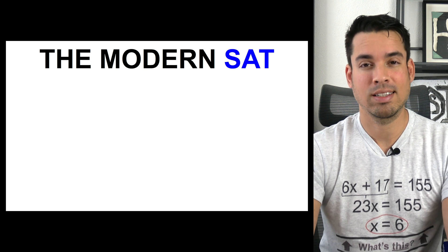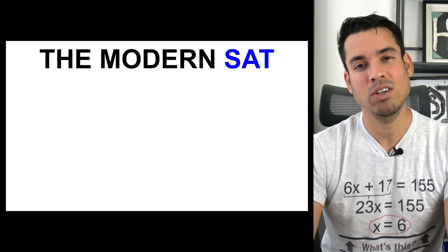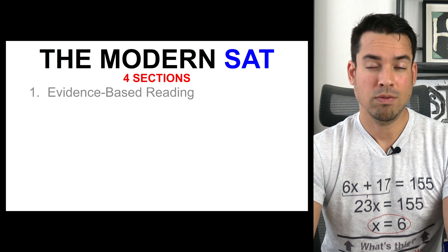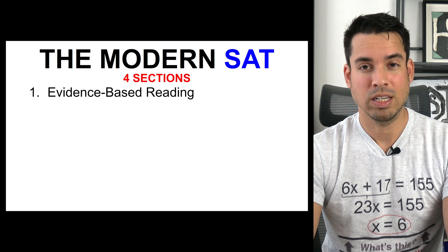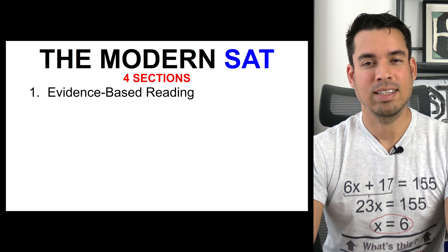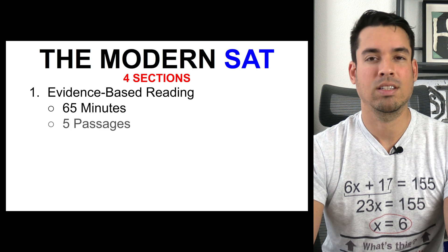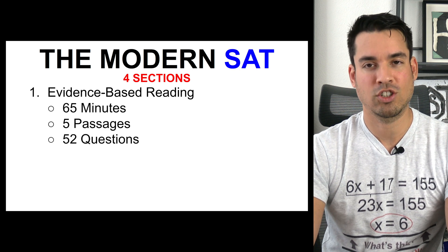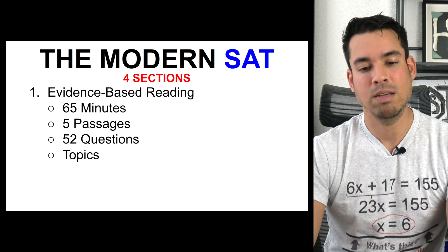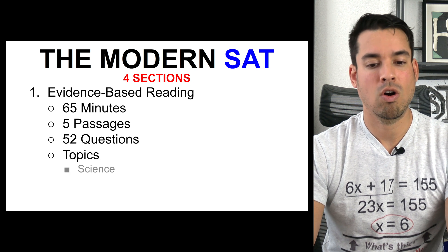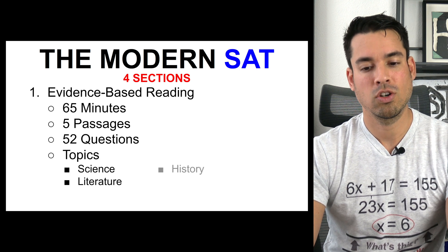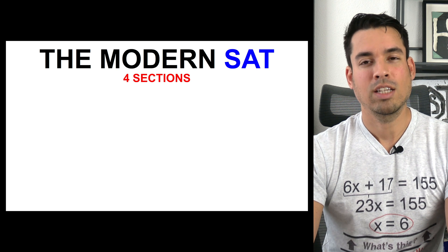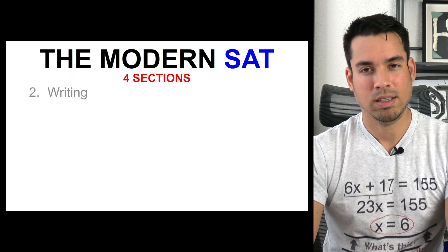Now that we've looked at some of the history of the SAT, let's look at the modern SAT. The modern SAT is comprised of four sections. The first is Evidence-Based Reading — this section is 65 minutes and contains five passages with a total of 52 questions. The topics covered in the passages are science, literature, history, and social science.